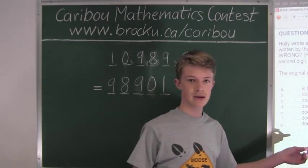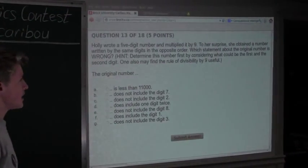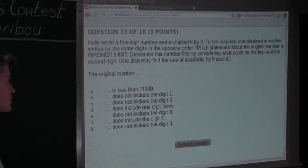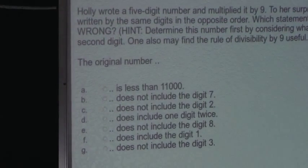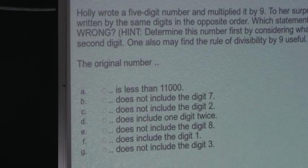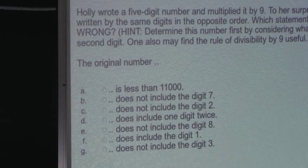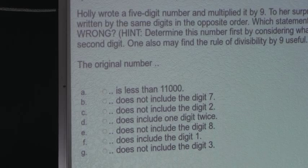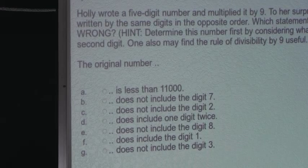Now let's look at the options. Which statement about the original number is wrong? Option A says the original number is less than 11,000 — that is correct, because 10,989 is less than 11,000. Option B says the original number does not include the digit 7 — that is also correct, because the number is 10,989.